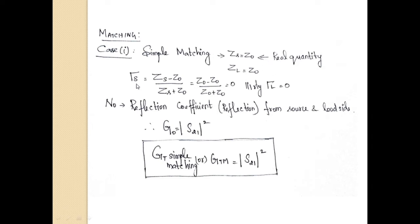With ZS = Z0, the reflection coefficient looking towards the source side is γS = (ZS − Z0)/(ZS + Z0), which gives zero. Similarly γL = (ZL − Z0)/(ZL + Z0) also gives zero. The meaning is: by using this simple matching approach, we won't get any reflection from the source side or the load side. So if you are designing an amplifier by removing source and load reflection coefficients, we can use this approach.